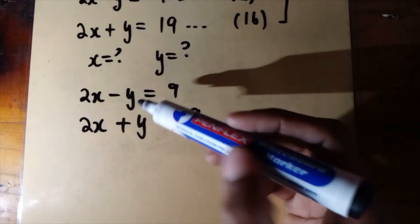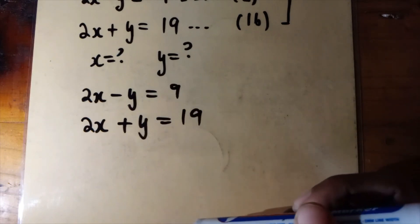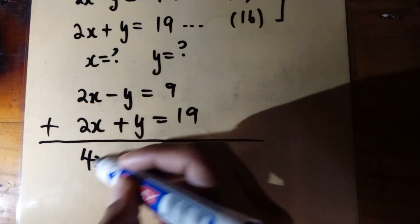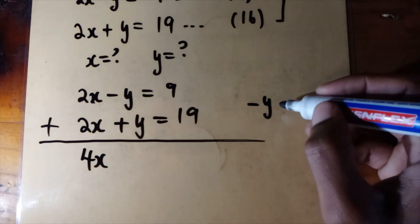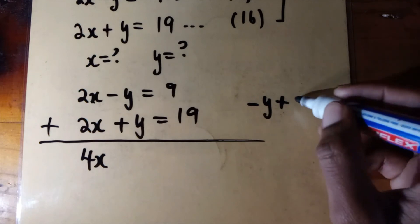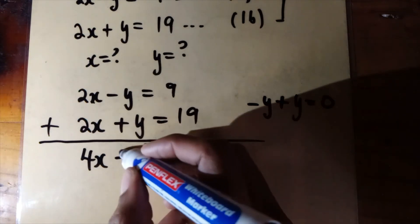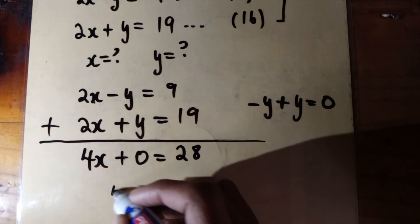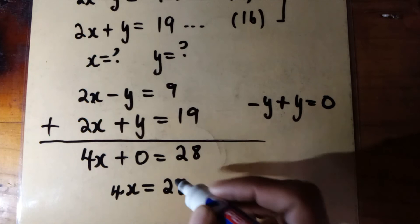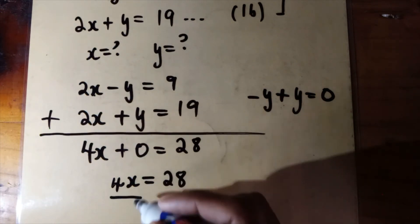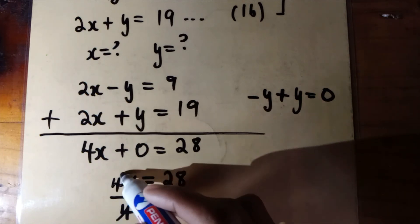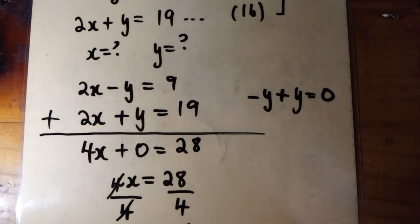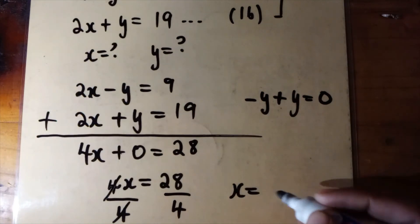To eliminate y, we add the two equations together. 2x plus 2x gives 4x. Minus y plus y gives 0, since they are additive inverses. Then 9 plus 19 gives 28. So 4x equals 28. Dividing both sides by 4, we get x equals 7.